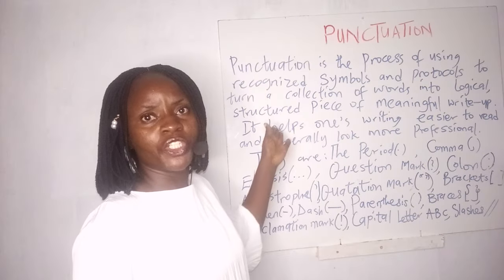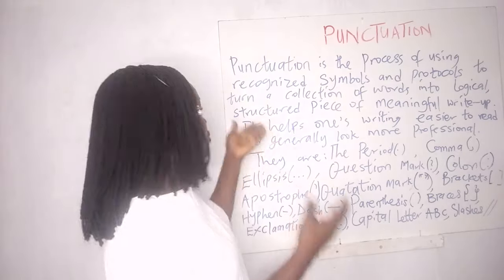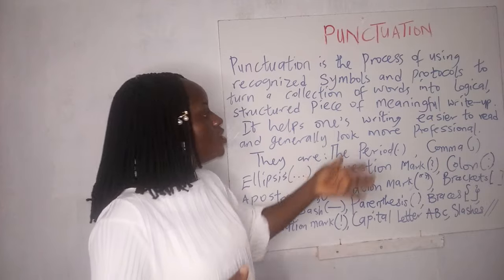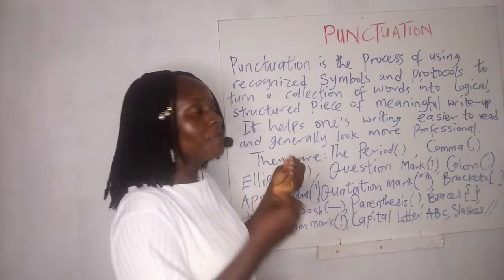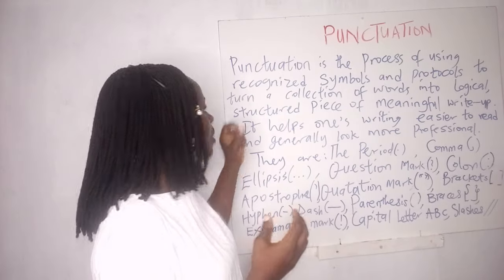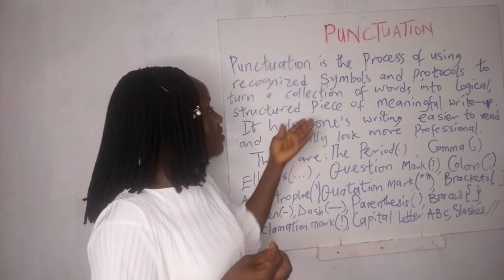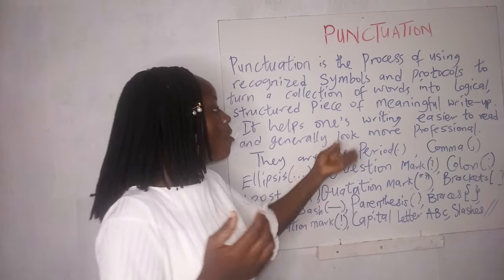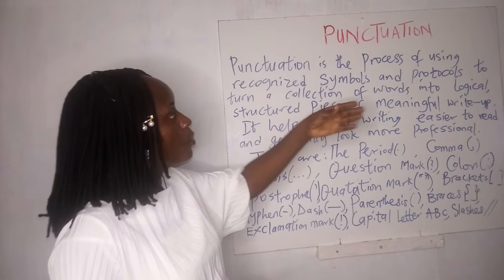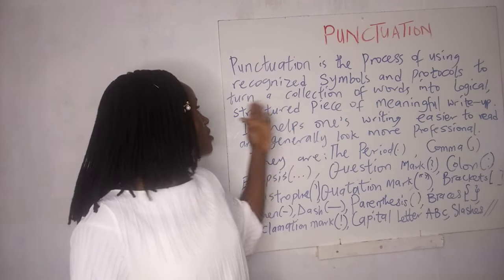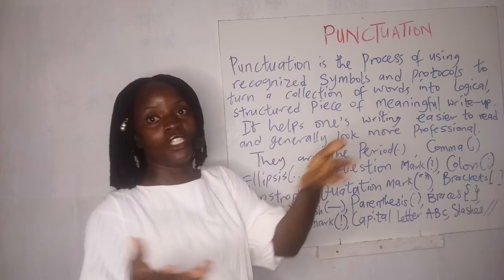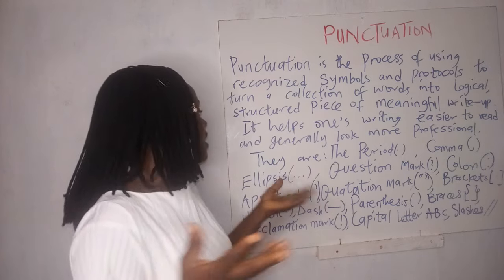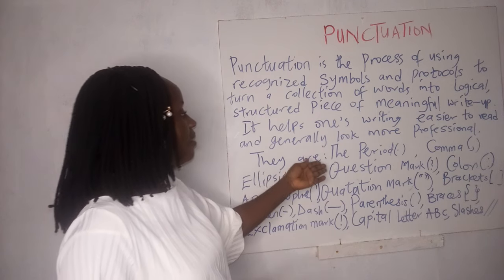The first goal today is to define punctuation. Punctuation is just the process of using recognized symbols. Punctuation marks are just symbols that actually make a collection of words look logical, meaningful — a meaningful piece of writing. The advantage of punctuation is that it makes writing easier to read and makes the write-up look more professional. The definition: punctuation is the process of using recognized symbols and protocols to turn a collection of words into a logical, structured piece of meaningful writing. It also helps make one's writing easier to read and generally look more professional.